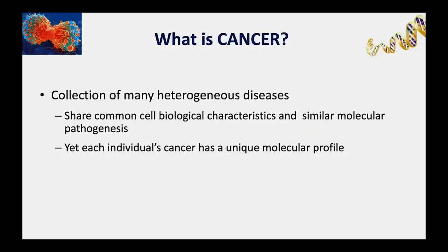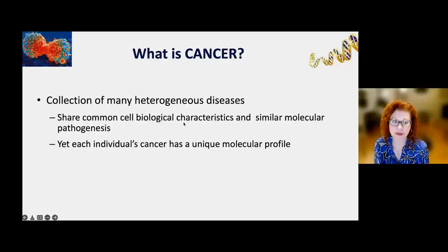When we use the term cancer, we generally mean a particular type of disease that can affect various organ systems and tissues. But cancer is truly a collection of heterogeneous diseases. Theoretically there can be as many tumor types as cell types in the body, and there are around 200 different histologic cell types identified in humans—so theoretically 200 different types of cancer. All these types share some common cell biological characteristics and a similar pathogenesis.